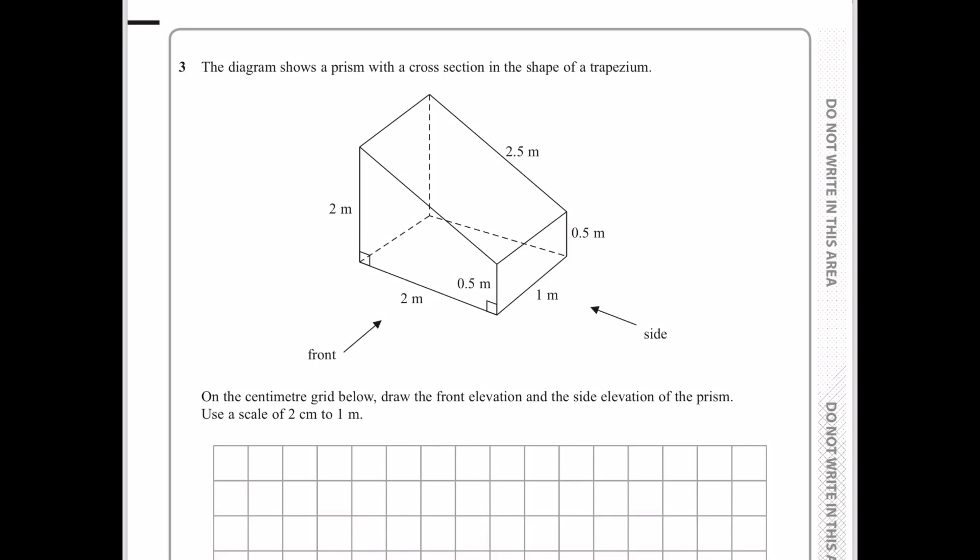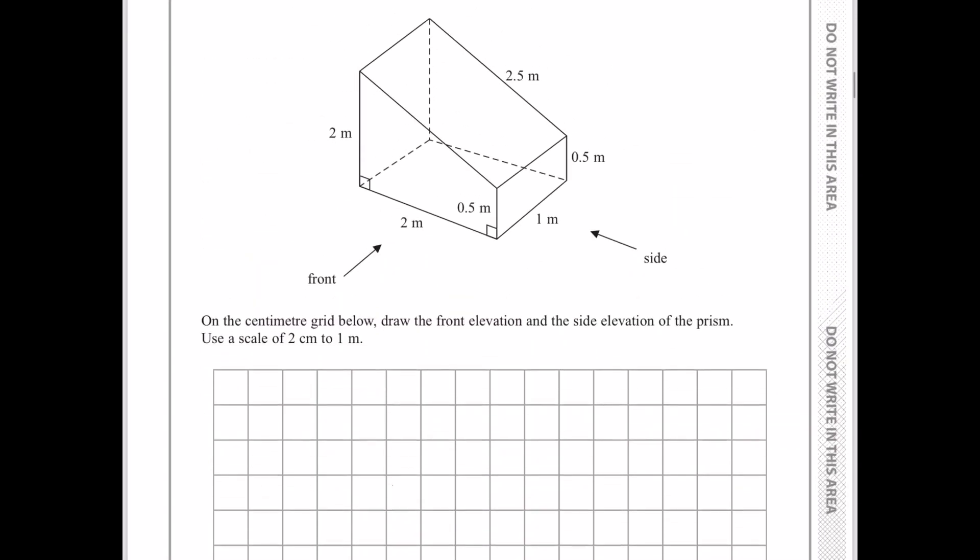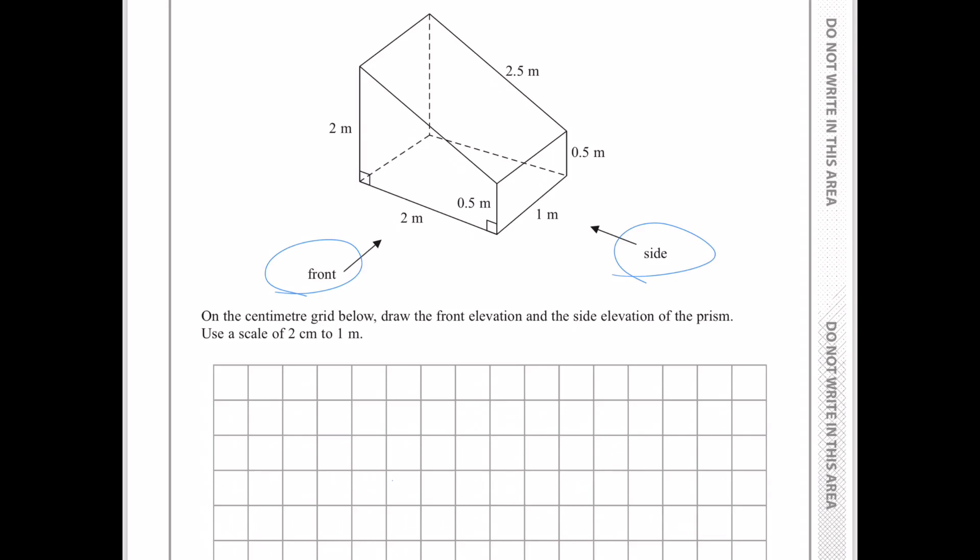the diagram shows a prism with a cross section in the shape of a trapezium. On the centimetre grid below, draw the front elevation and the side elevation of the prism.